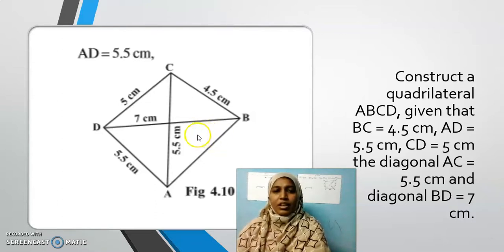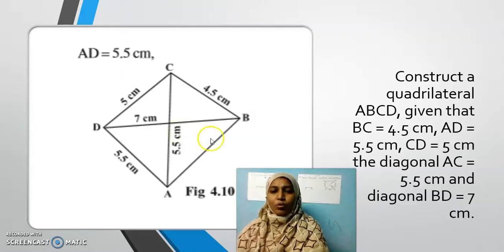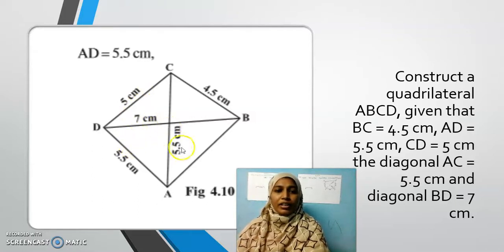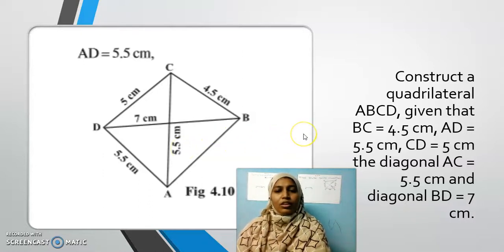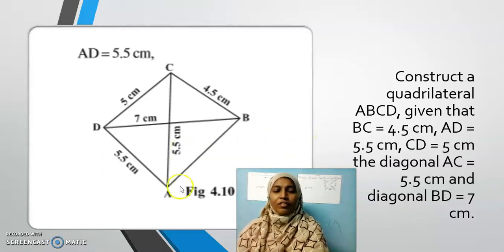Before constructing, we should make sure that it is possible to construct a quadrilateral by the property of triangles. Check whether if I add any two sides, do I get greater than the third side. Then it is possible to construct it. Are you all ready children? Shall we do it now?